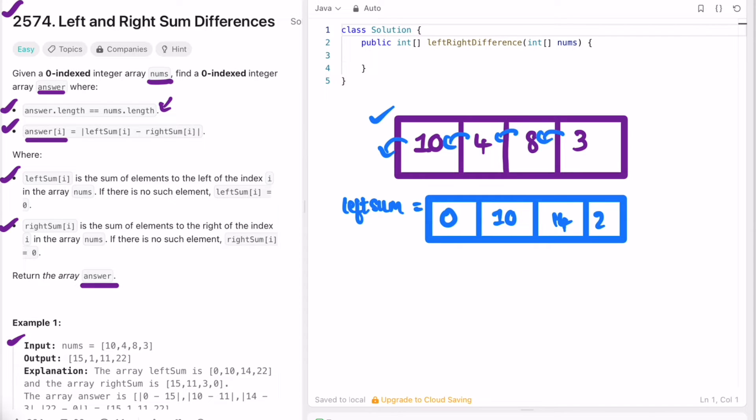So we find our left sum. Let's do the same for right sum. Right sum for all the elements to the right: for this index is 15, right sum for the index from 4 is 11, right sum for 8 is 3, and since there is no element to the right of 3, we put 0 as the right sum for 3.